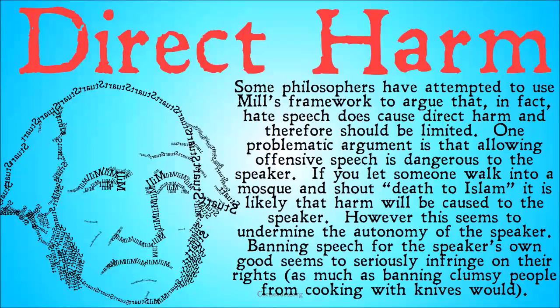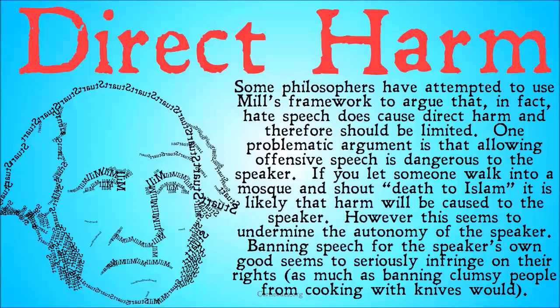There are philosophers who have argued that hate speech is sufficient to be classified as a direct harm — something that Mill would have allowed to be censored. One problematic argument for this case is that allowing offensive speech is dangerous to the speaker. If you let someone walk into a mosque and shout 'death to Islam,' it's likely that harm will be caused to that speaker. However, this seems to undermine the autonomy of the speaker. Banning speech for the speaker's own good seems to seriously infringe on their rights, as much as banning clumsy people from cooking with knives would.